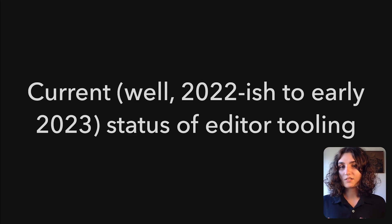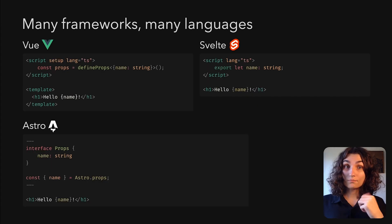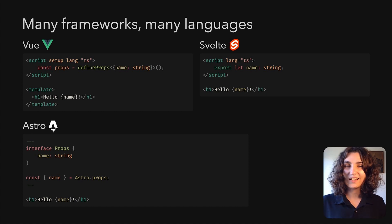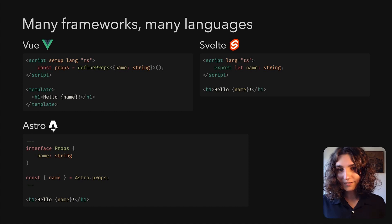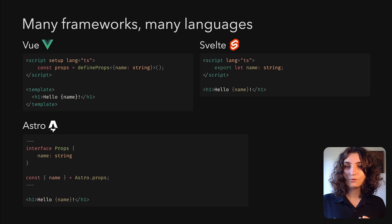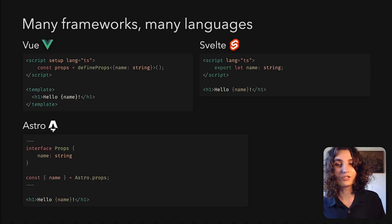Before we get into what makes Volar so great, I'd like to do a quick tour of the current status of editor tooling, the current challenges, and why Volar is so interesting in the first place. We have many frameworks and many languages, each with different features and their own syntax — it's a lot. One thing they all have in common is that you use them in a code editor, so you need editor tooling. Nowadays, people expect editor tooling and all related features to work just like they do, no matter what kind of files they open.